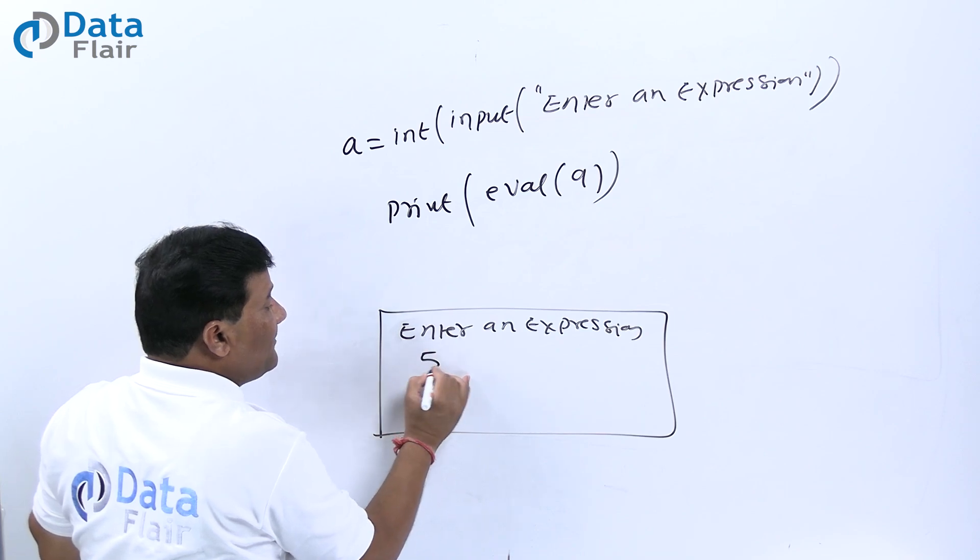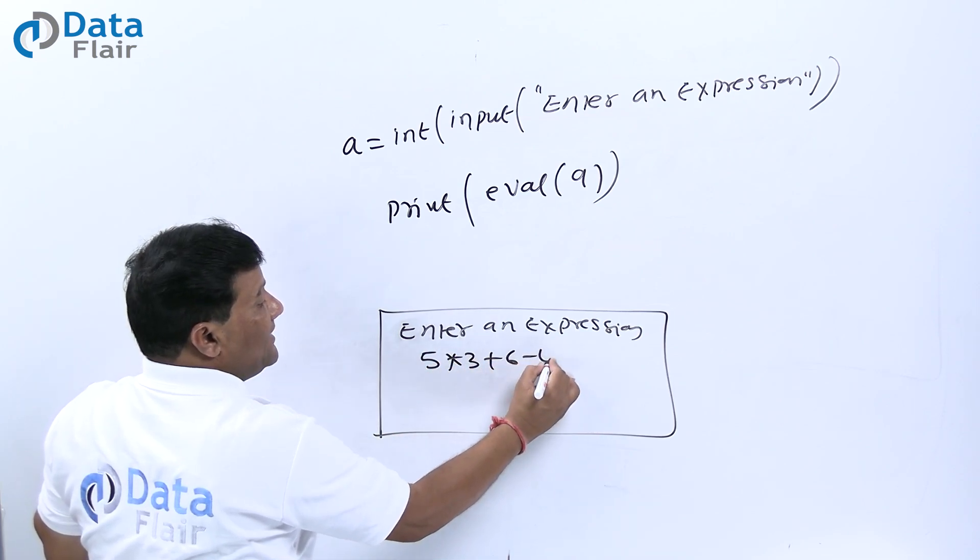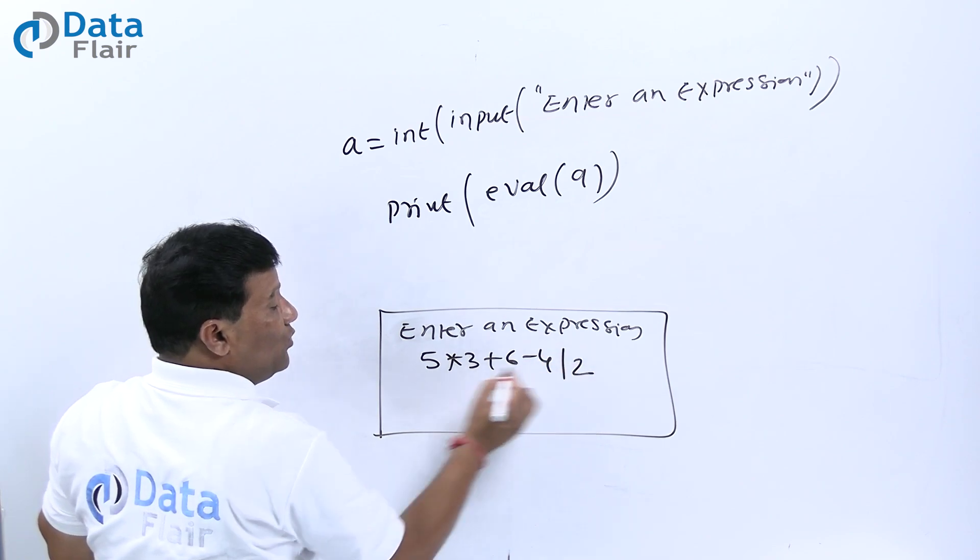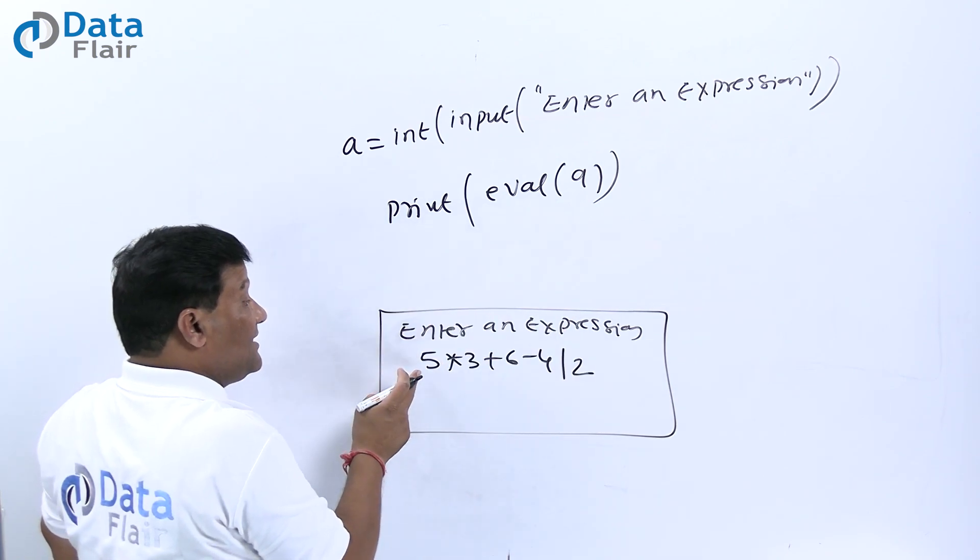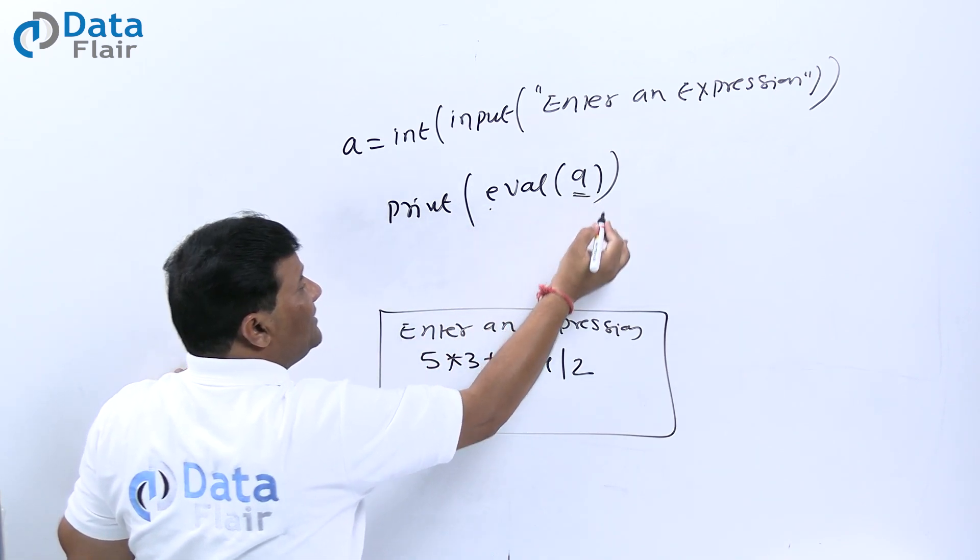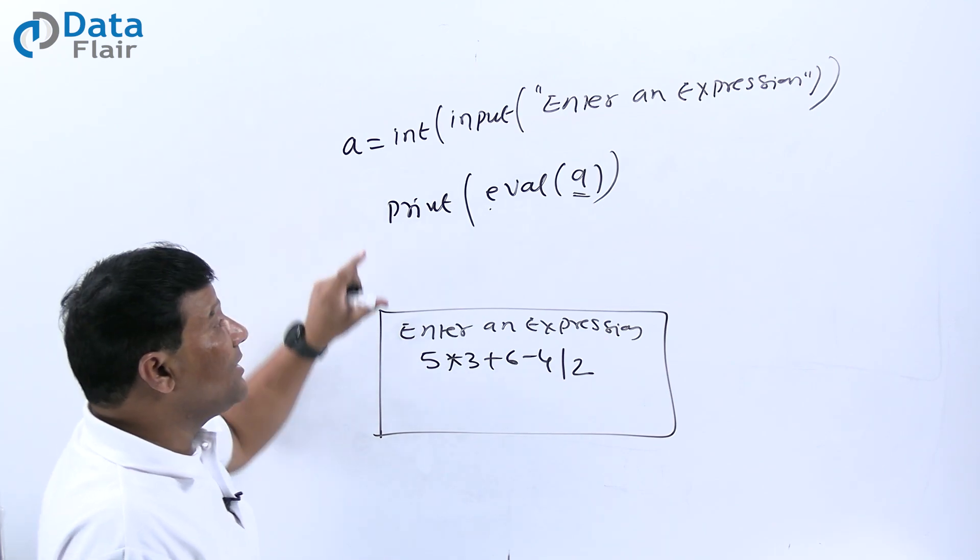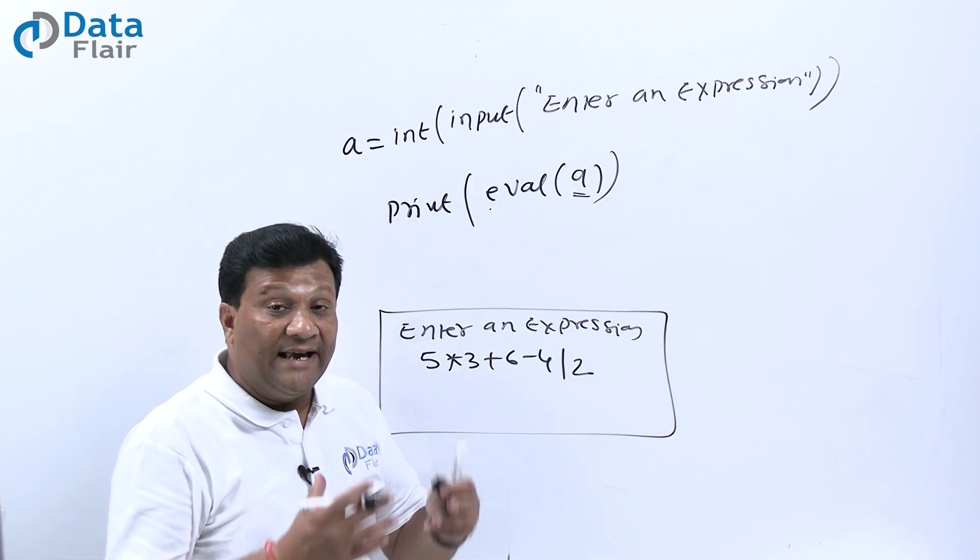You can directly write down an expression like 5 into 3 plus 6 minus 4 divide by 2. This complete expression will be read and the evaluate method will evaluate this expression and give the result to you.